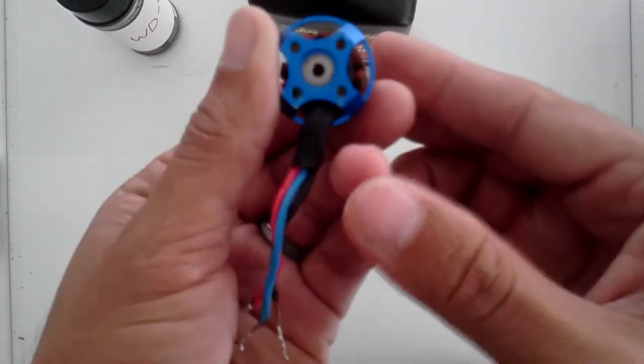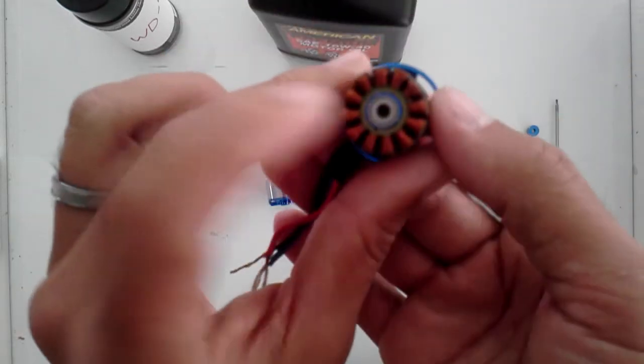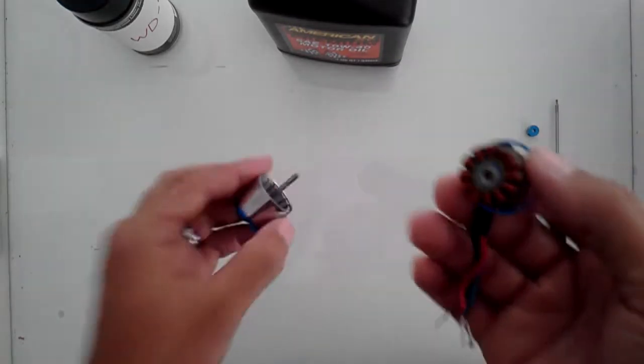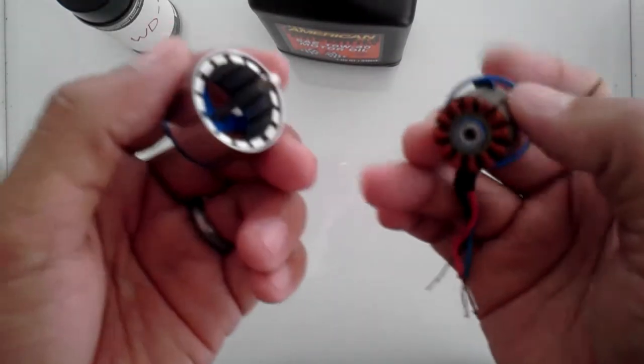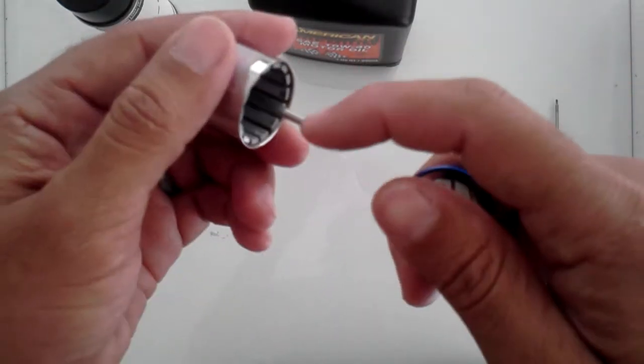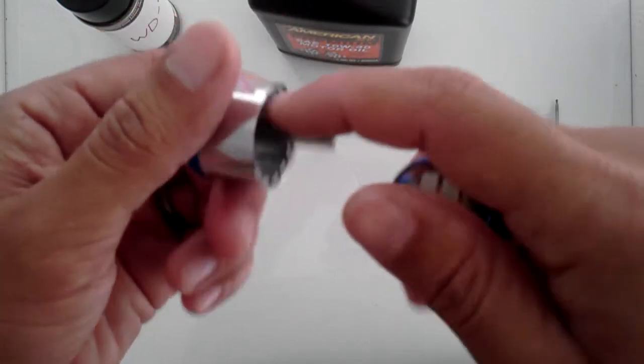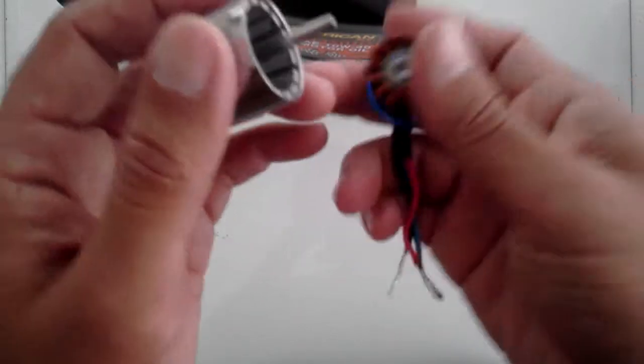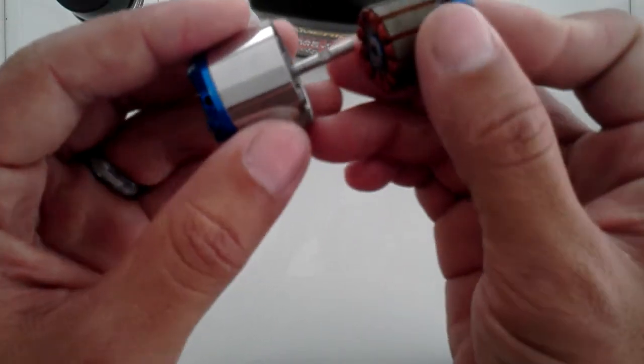Bottom bearing. And what I normally do also is I'll take some motor oil and just put some on the shaft. Coat the shaft. Lube the shaft.